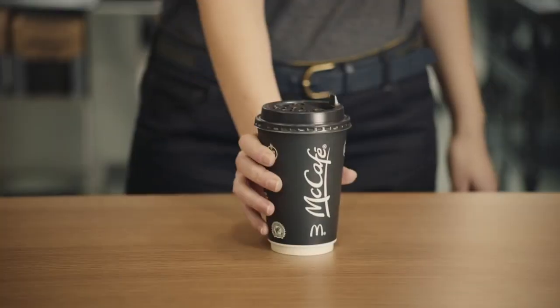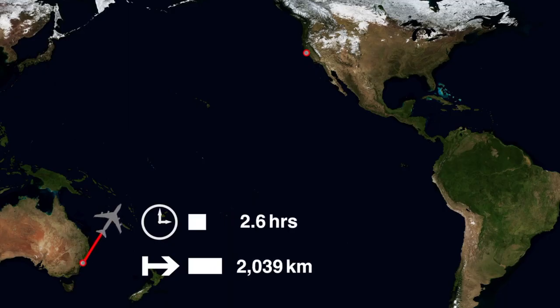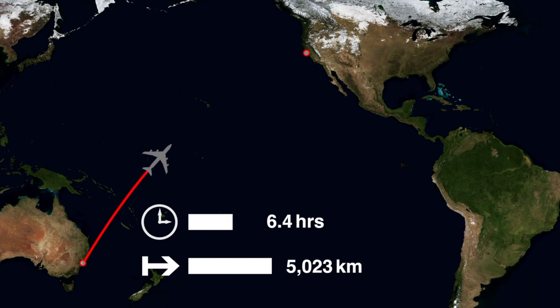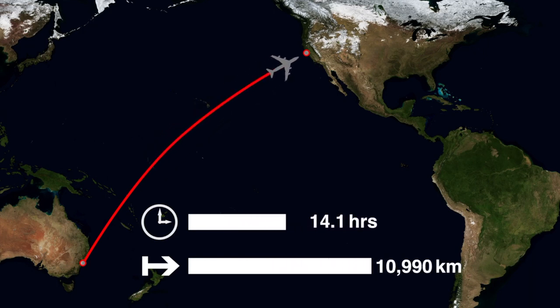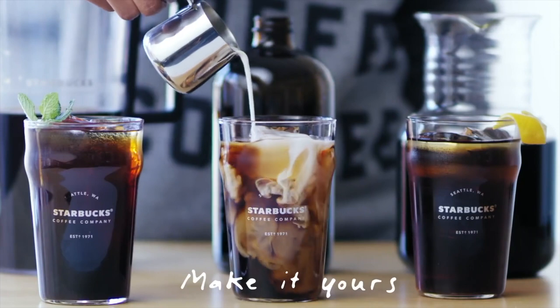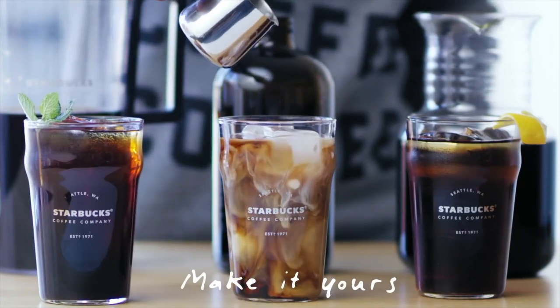Let's ramp up the distance. We can create a link between a city in East Australia to somewhere on the west coast of the US for about six dollars — a slightly more expensive cup of coffee at Starbucks.